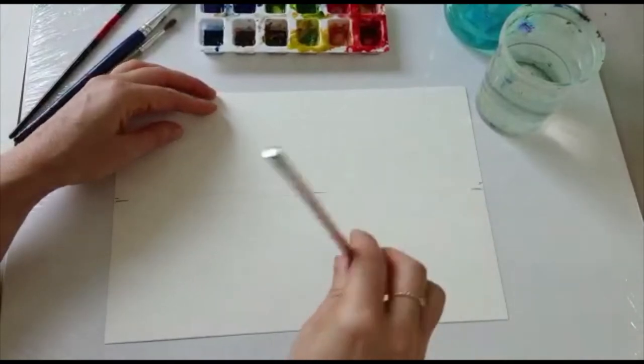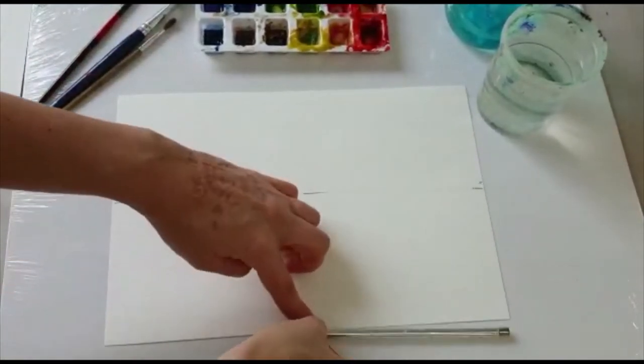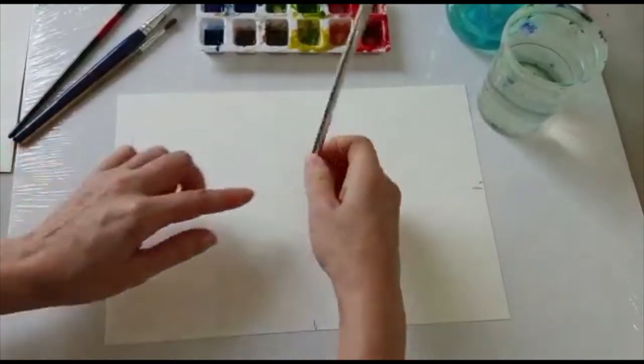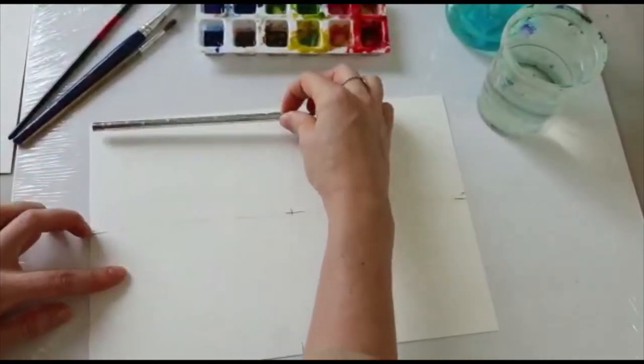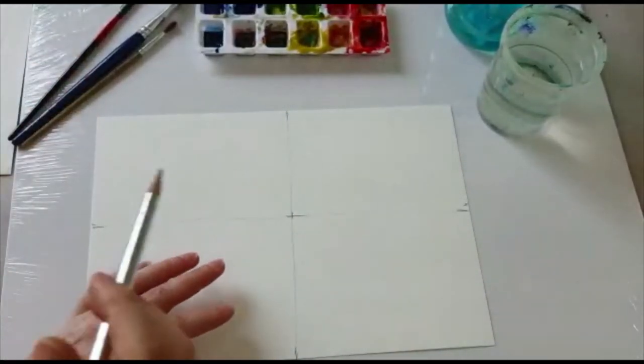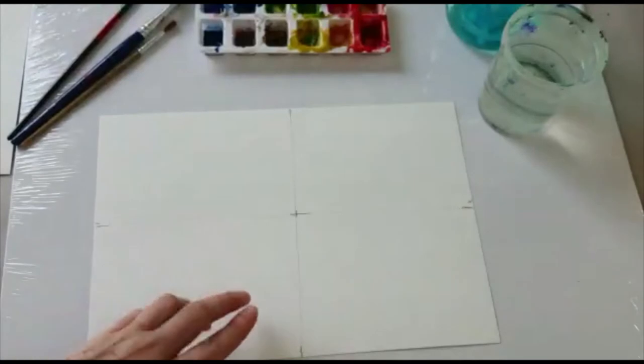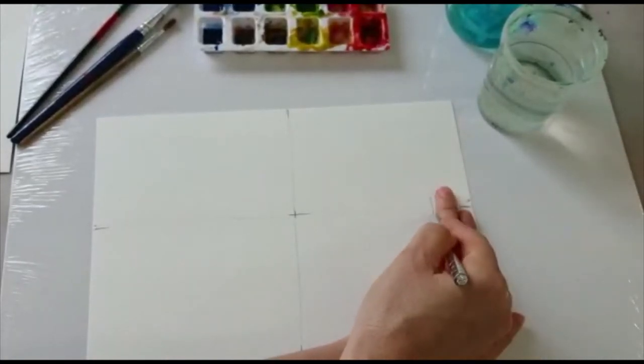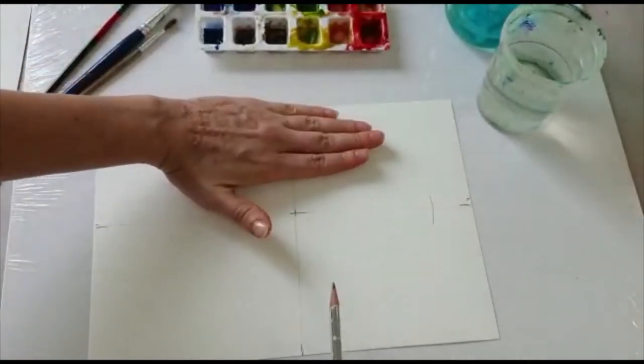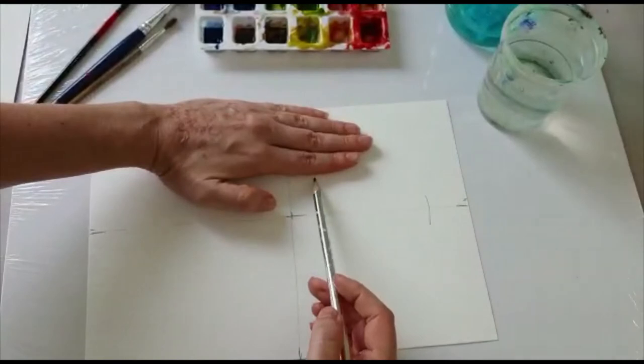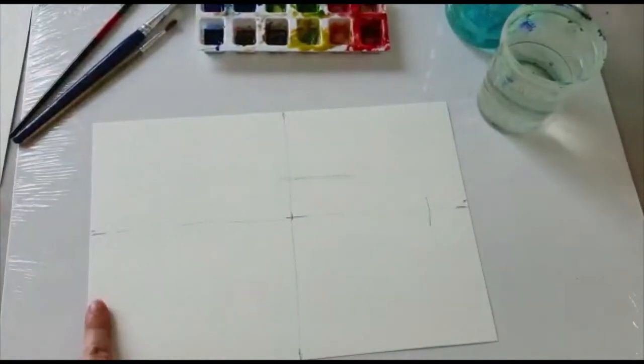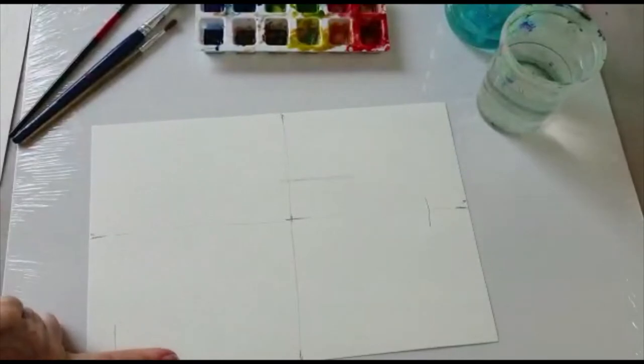These two lines are going to help us find a good position for our composition. Now give a little bit of space on the right side of your paper. From the top, I'm going to have four fingers down. That's going to be on the back of the cat.